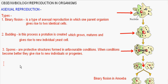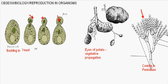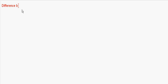Now, the differences between asexual and sexual reproduction. In asexual reproduction, a single parent cell gives rise to one or more progenies. The process is much simpler than sexual reproduction.